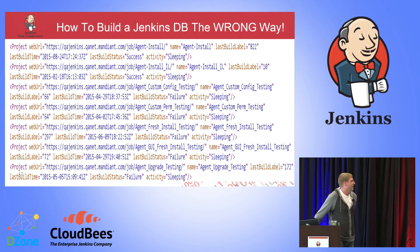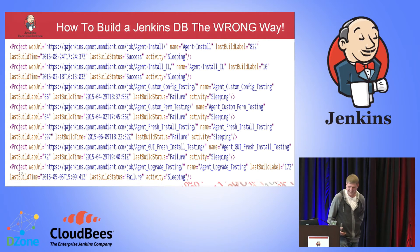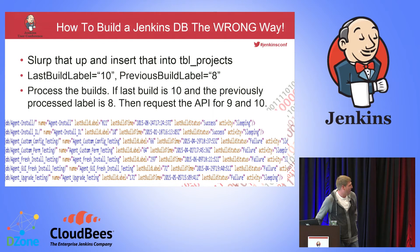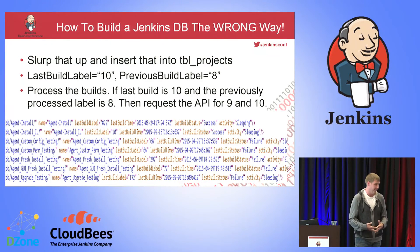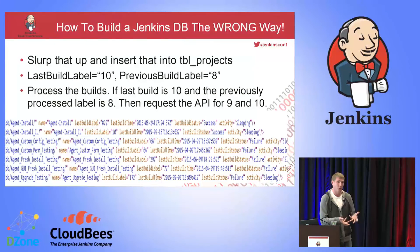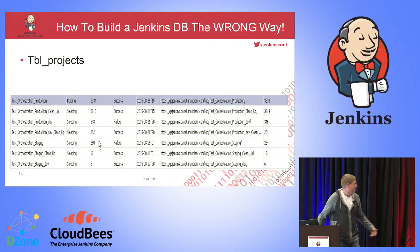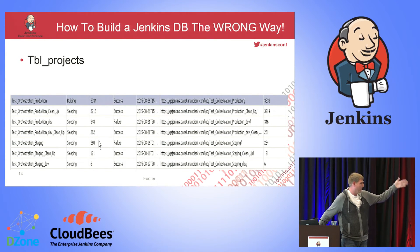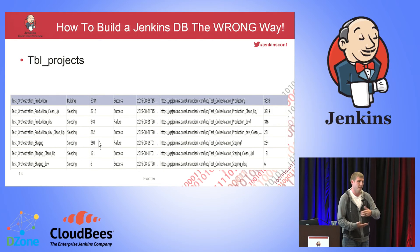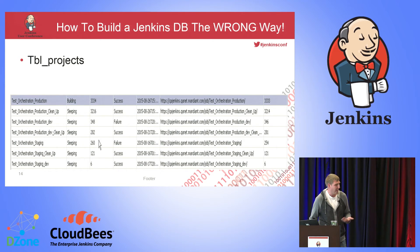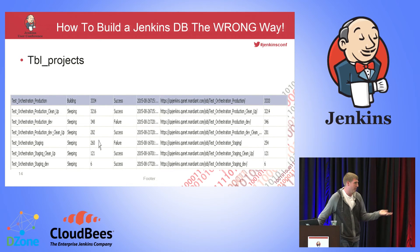This is awesome to find, especially when someone told me it was impossible to get this information. So you're going to slurp that up and insert into the projects table. Last build label 10, previous build label 8 — and we're going to use that as a way of creating a work queue. That's what the table looks like — I'm also keeping the previous value so that when I call CC.XML, I capture what's there, work through that queue, but also save what I did before my next call. So last time I processed the most current build, now there's two more builds that were run — okay, I'm going to run those two now, because I have to keep track of all that.